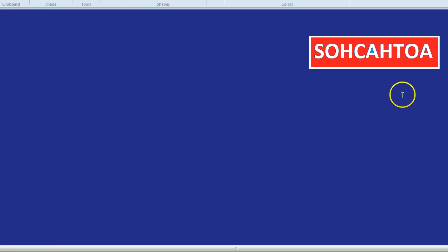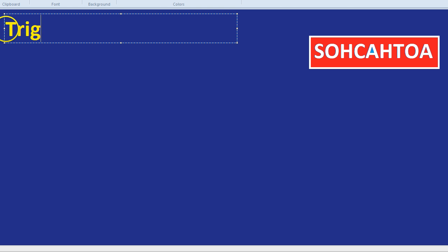There's a fun aspect of SOHCAHTOA that I want to deal with in this video and that's when the unknown that we're looking for, the unknown side, is in the denominator of the fraction. Things get a little bit freaky so we're going to talk about that in this video. Trigonometry with the unknown beneath.